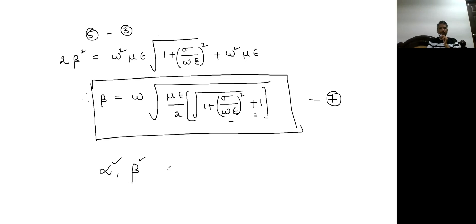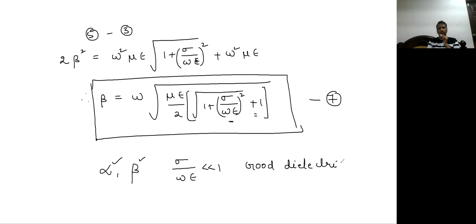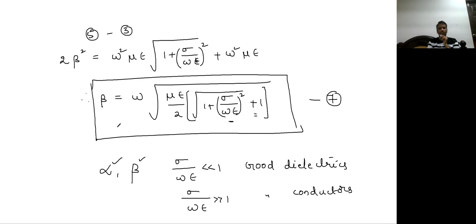These expressions for alpha and beta are in terms of sigma by omega epsilon. For good dielectrics, sigma by omega epsilon is very very less than one, and for good conductors it is very very greater than one. By substituting these conditions we will simplify alpha and beta — that is what we are going to do in the coming lectures.